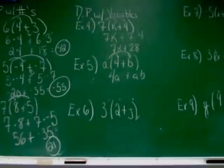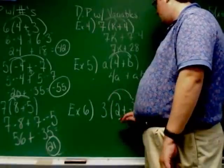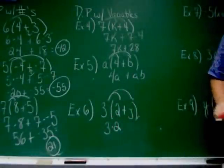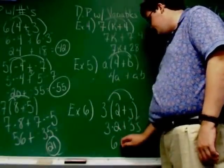Alright. Example 6: 3, and then in the parentheses, 2 plus J. So what two things is 3 going to have to get multiplied by? What two things do I have to carry the 3 through to? Yeah, 3 goes through to the 2. 3 goes to the J. 3 times 2 is going to give me 6. And 3 through to the J, just 3J.